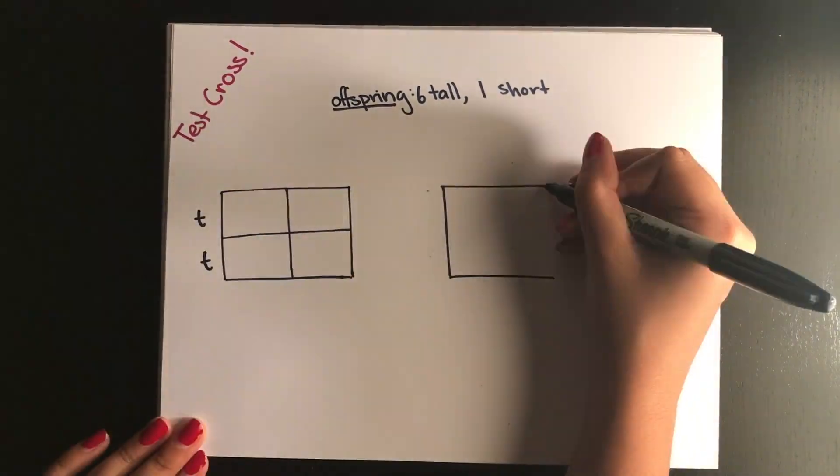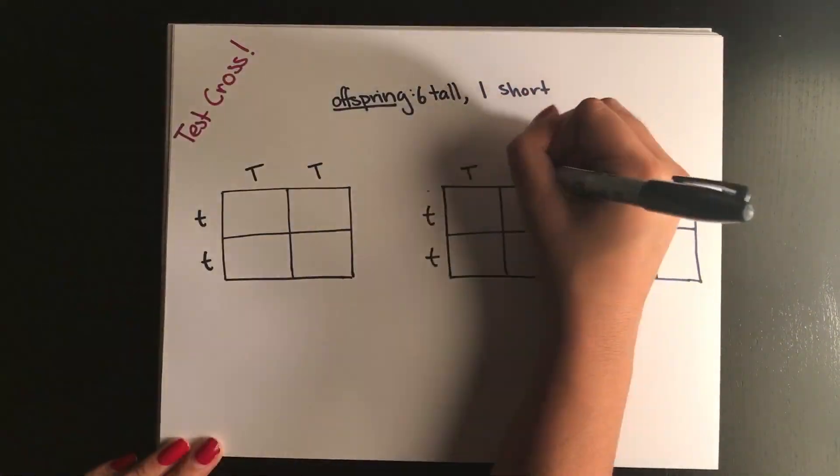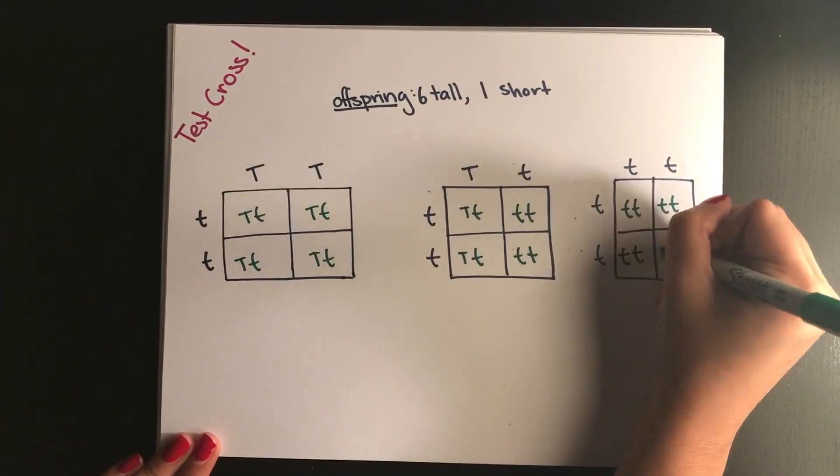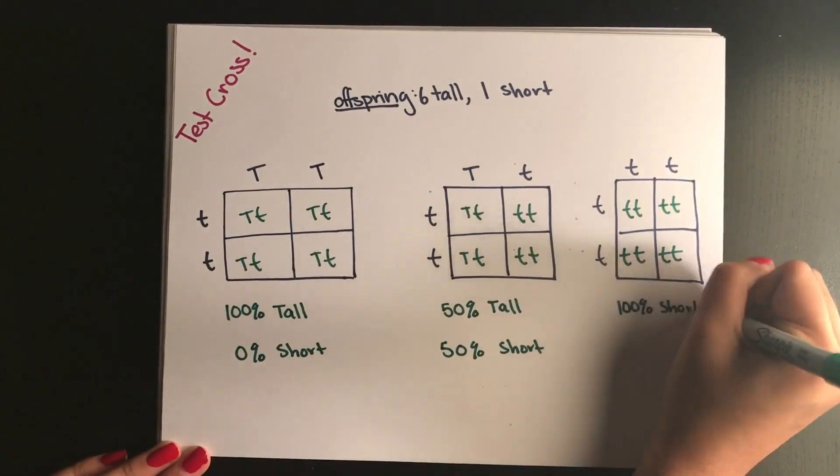To work backwards and find the genotype of an original plant, biologists use test crosses in which they cross the plant with the recessive genotype and look at the offspring.